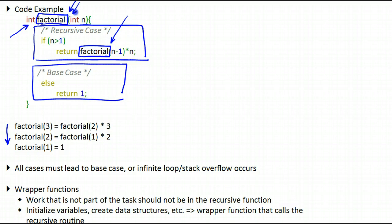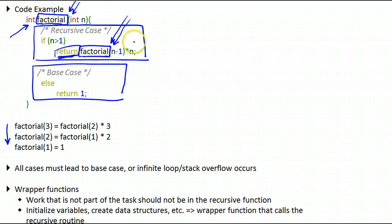We're defining a task using a smaller and similar subtask. When a number is passed to us that is larger than 1, we will return — this will be the solution we return to the caller — which will be composed of the multiplication of that number passed to us and the factorial of that number reduced by 1.